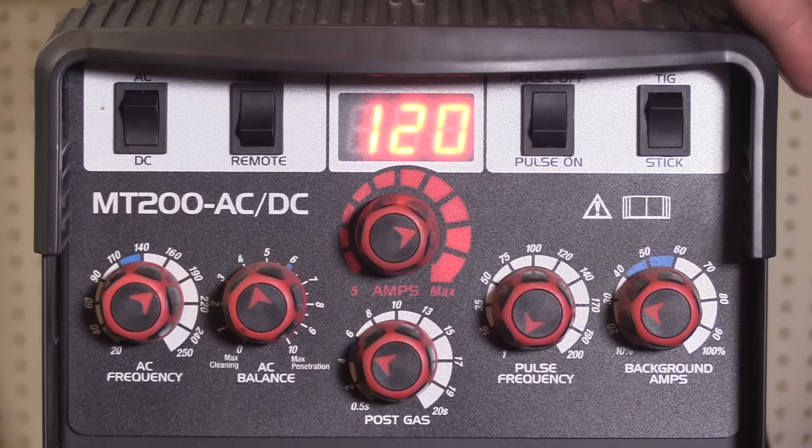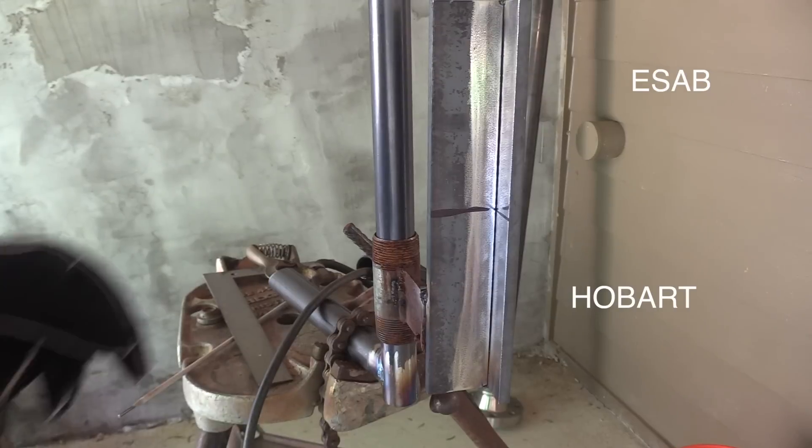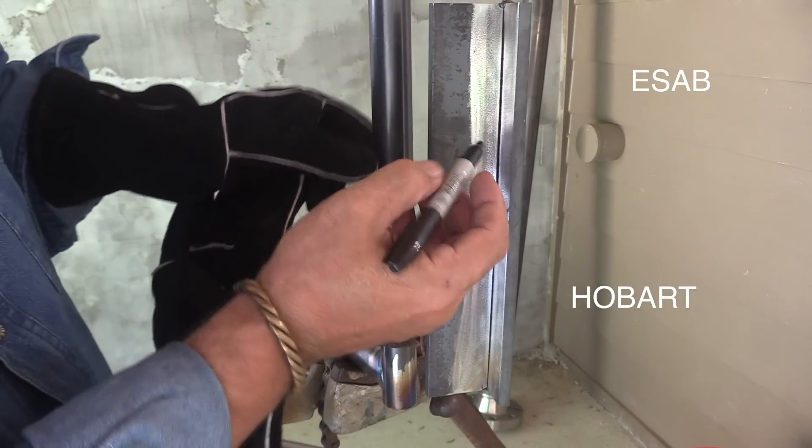So I'm going to settle in for the first pass, 120 amps, DCEP, three-eighths inch thick metal.